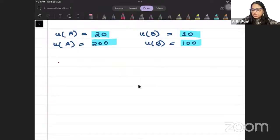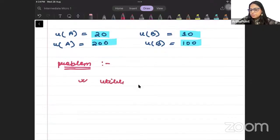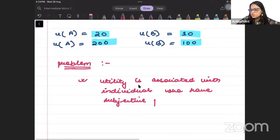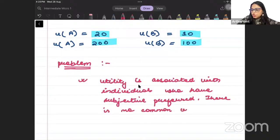Now, there is a problem with cardinal utility concept. That utility is associated with individuals who have subjective preferences. There is no common unit that can be used.